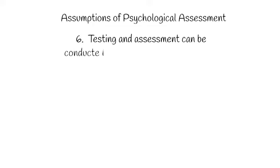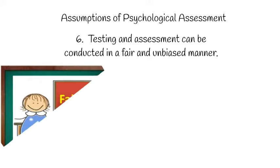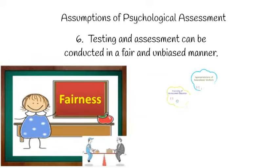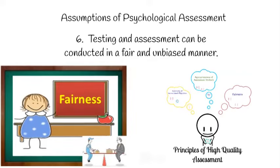The sixth assumption is that testing and assessment can be conducted in a fair and unbiased manner. It is important to keep in mind that tests are tools, and just like any other tools such as hammers, ice picks, or wrenches, they can be used properly or improperly. We need to know the possible sources of bias or unfairness in assessment so that we can find ways to overcome them.